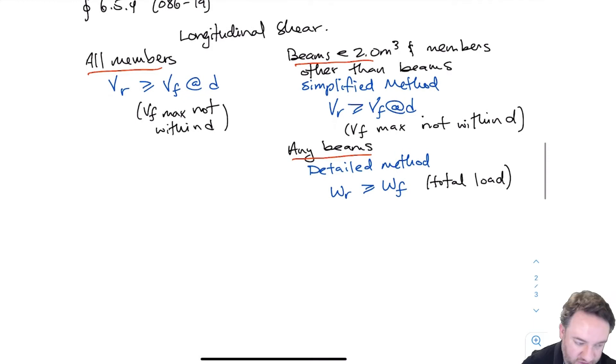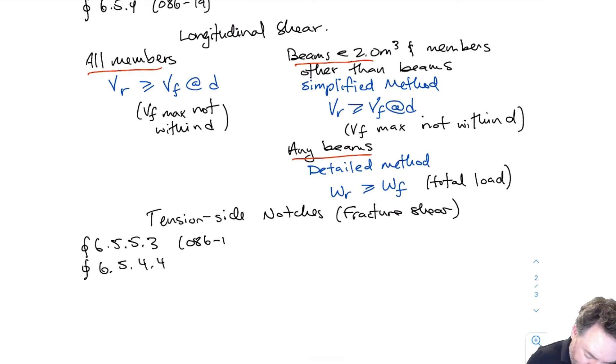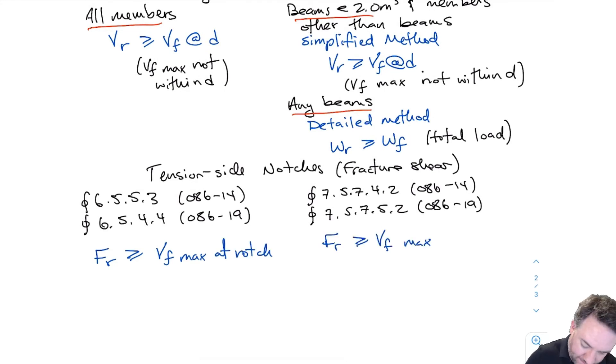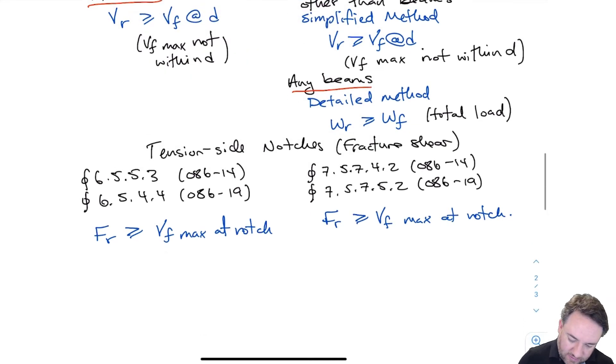So what about notch shear? We have two different notch shear approaches, depending on whether you're talking about a notch that's on a tension side of a beam, or a notch that's on the compression side of a beam. So the tension fracture shear approach for glulam and lumber is very similar. There are the clauses for each. Those clauses look very similar. And what I'm calculating is an FR, which is a fracture shear strength. And I compare it to the maximum shear within that notch. So very straightforward.